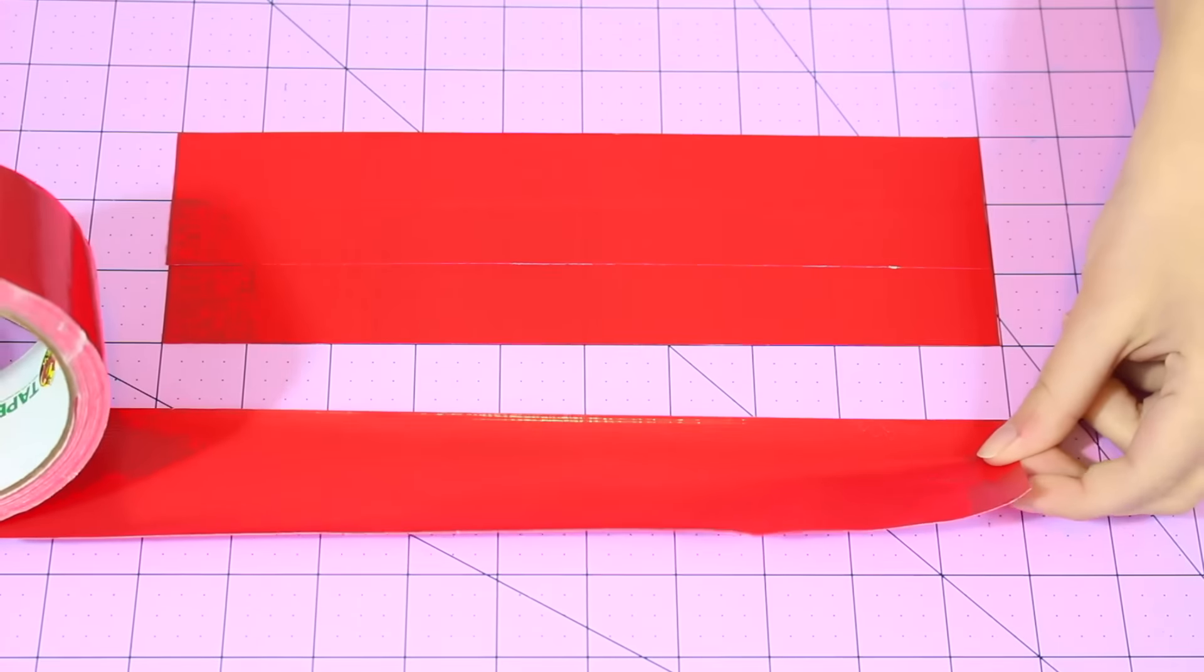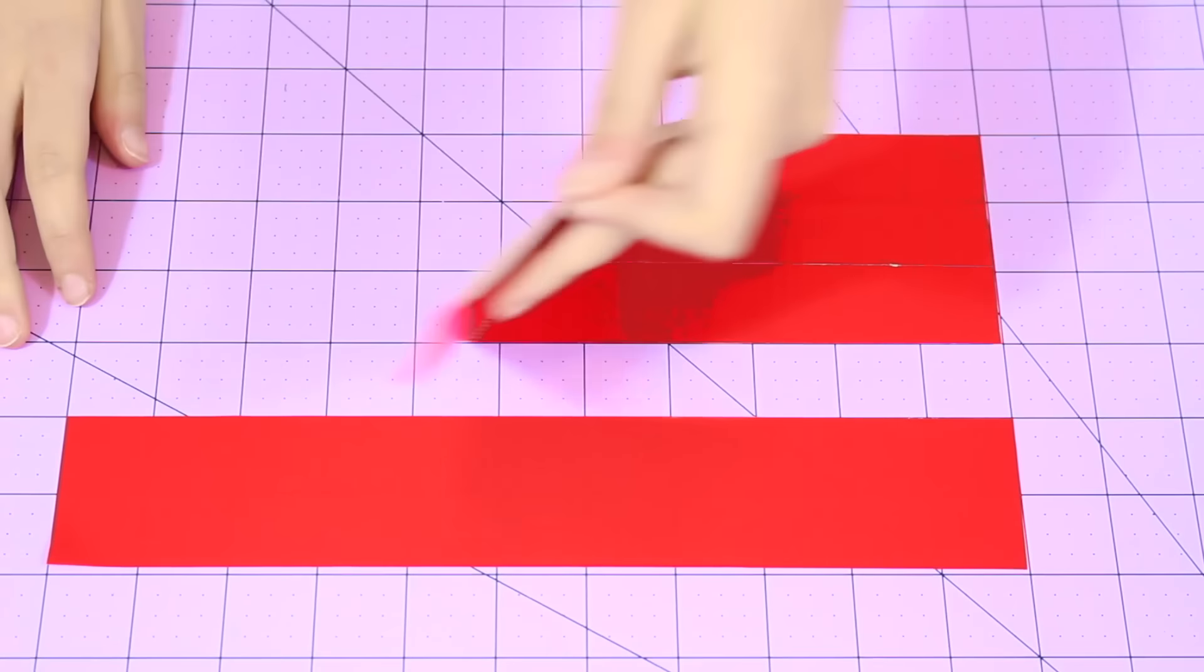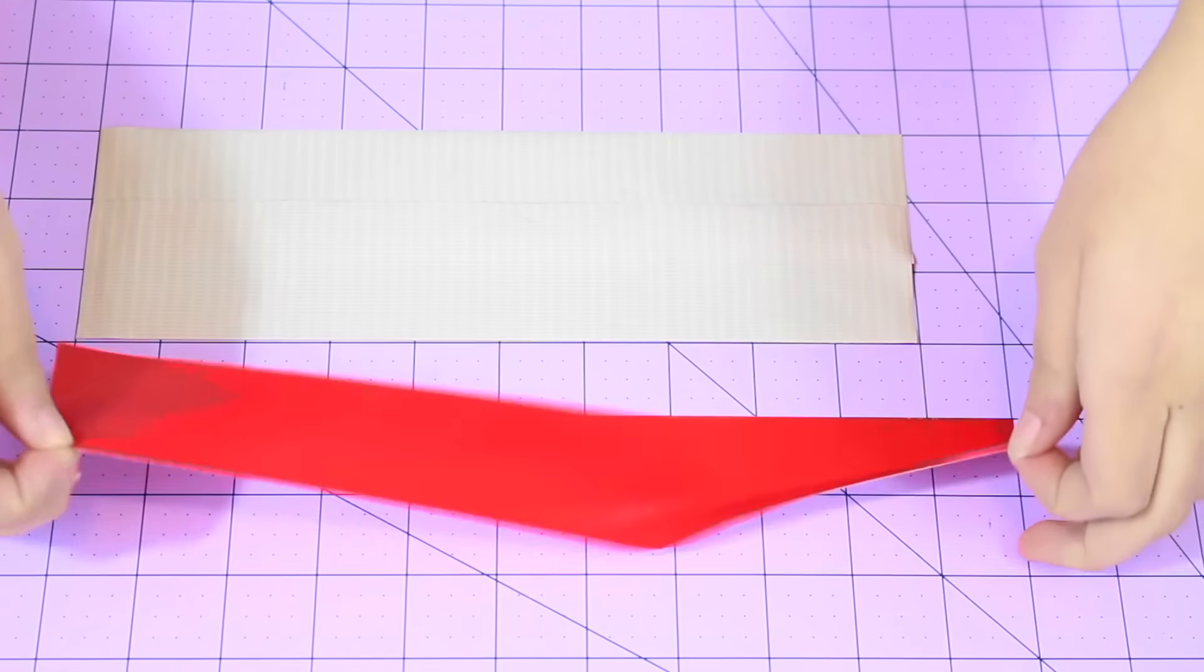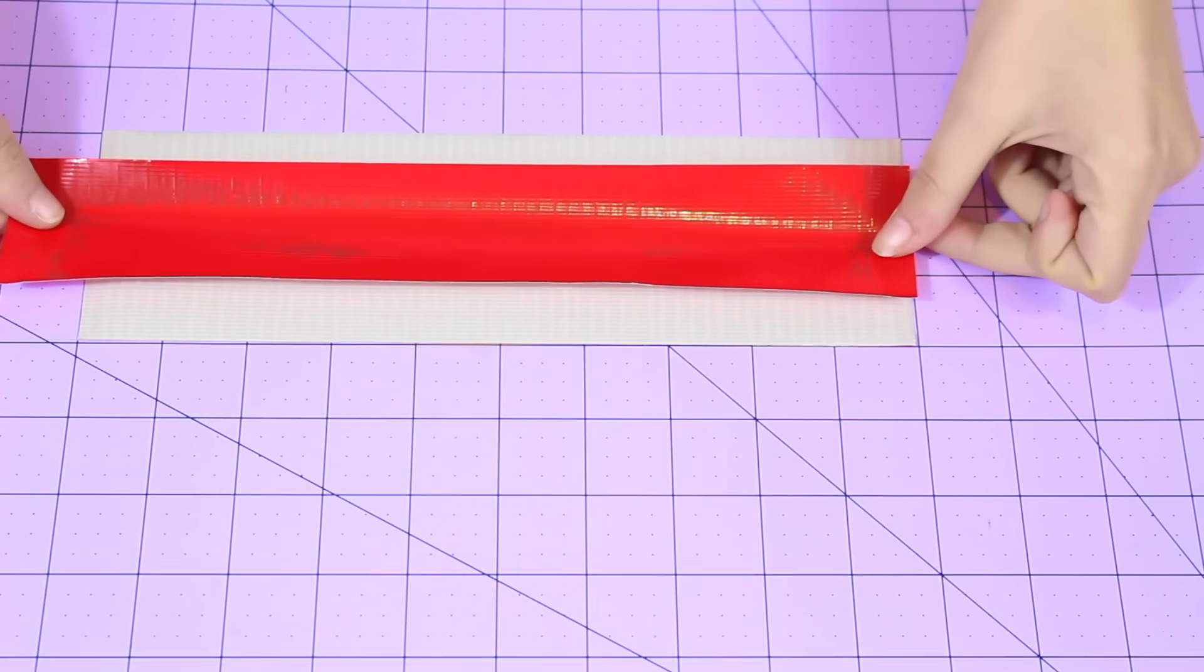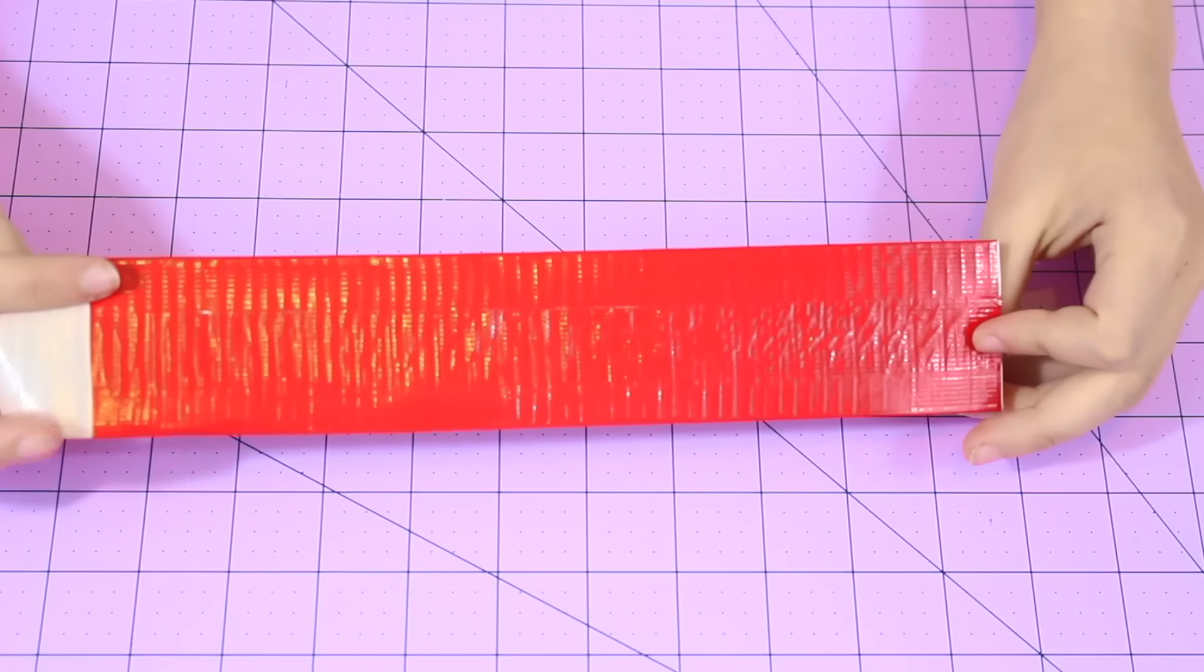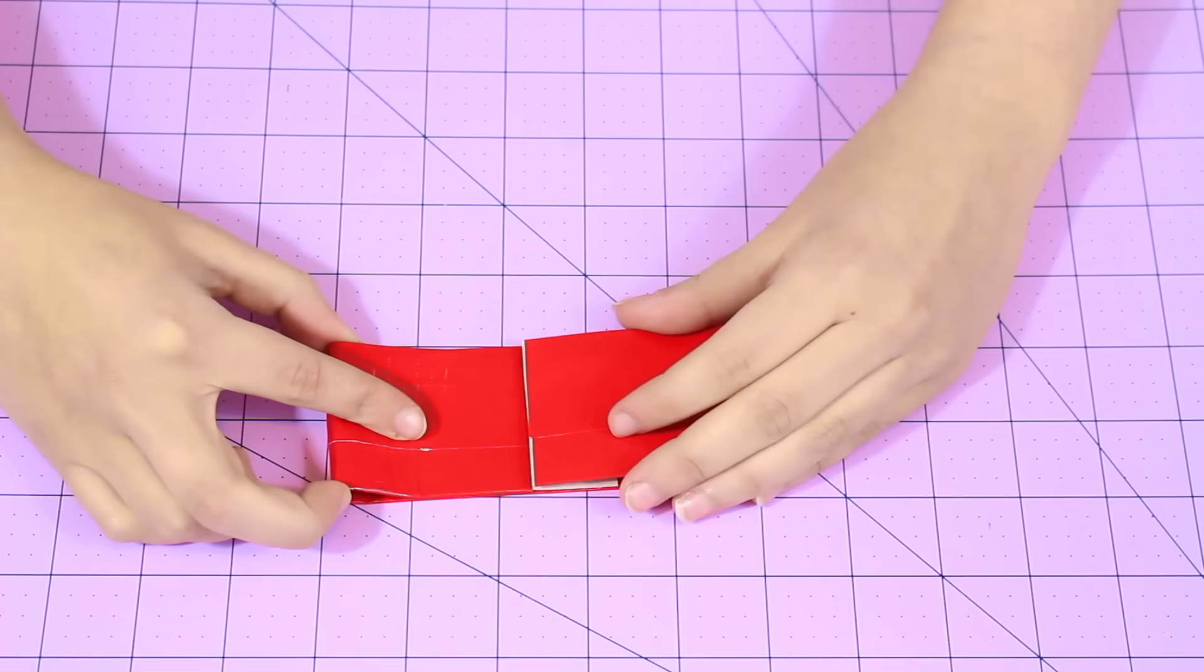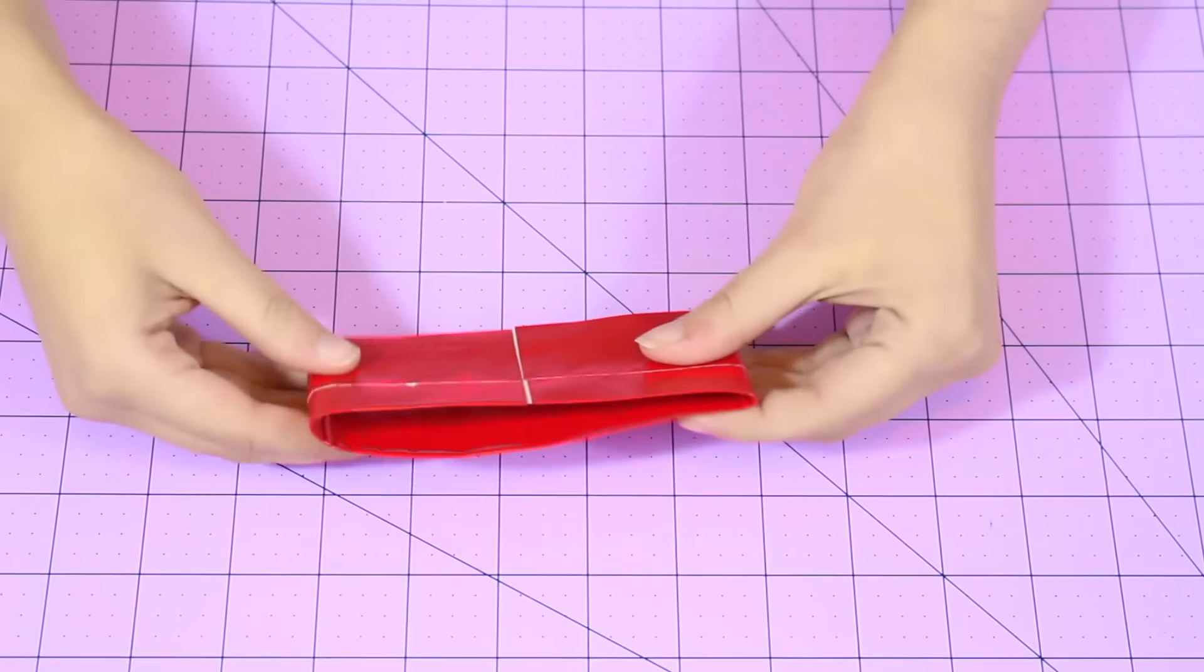Now I'm going to take one strip of duct tape and that is going to be 11 inches long. Okay so now I'm going to pull up this 3 inch tall piece and I'm going to place the 11 inch long piece right in the middle. And I'm going to fold over the excess. So now we should have a piece that looks like this and we're going to fold this inward and place that right onto the sticky.